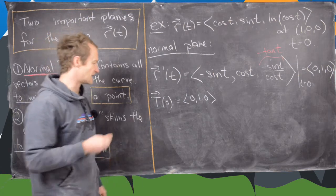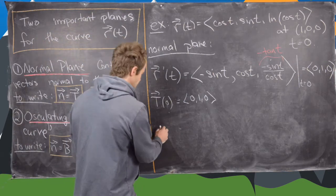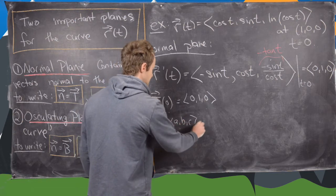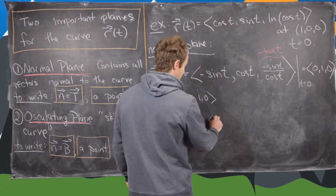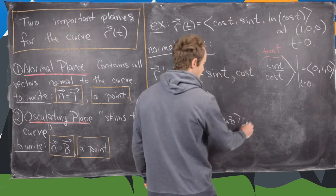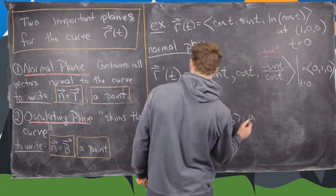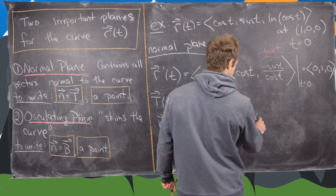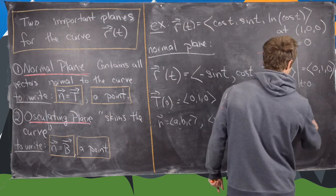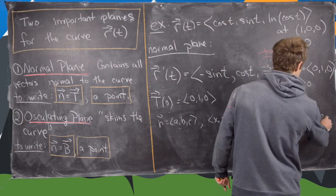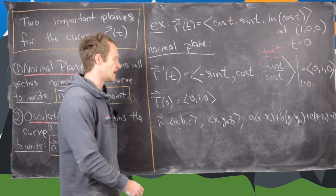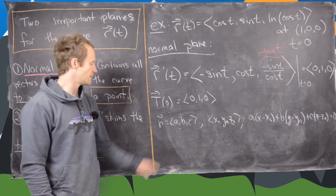Let's recall the equation of a plane with a normal vector given by (a, b, c) and a point given by (x₀, y₀, z₀): it is a(x − x₀) + b(y − y₀) + c(z − z₀) = 0. Given this data, that's the equation of the plane.